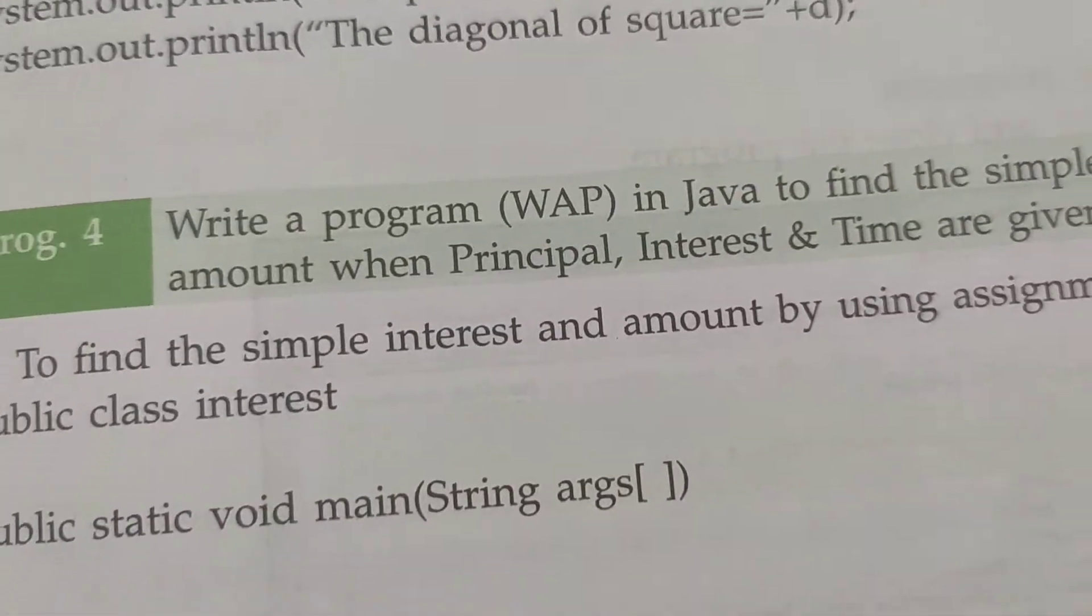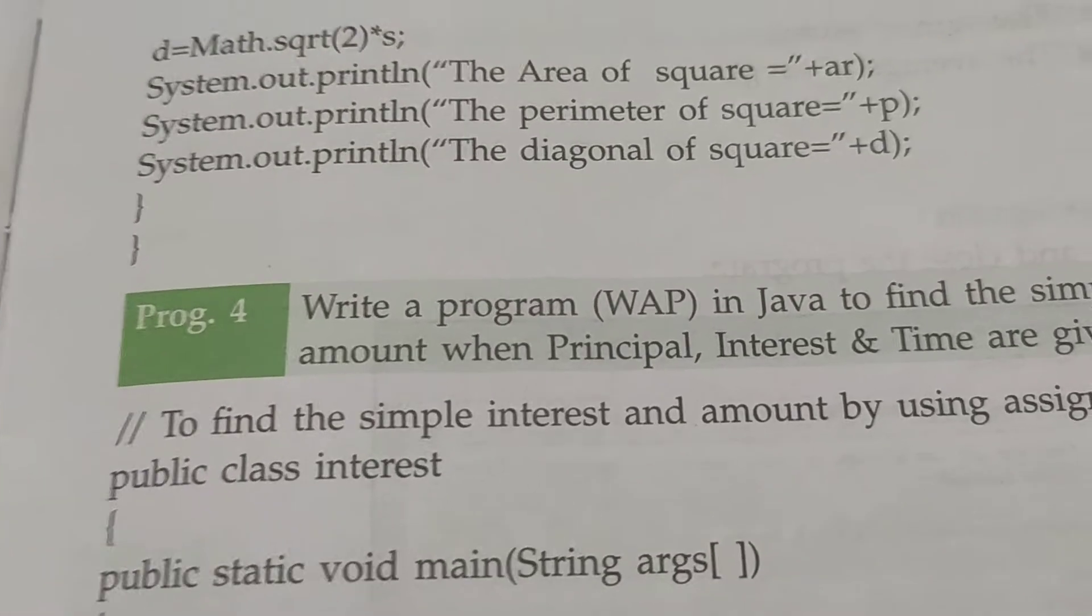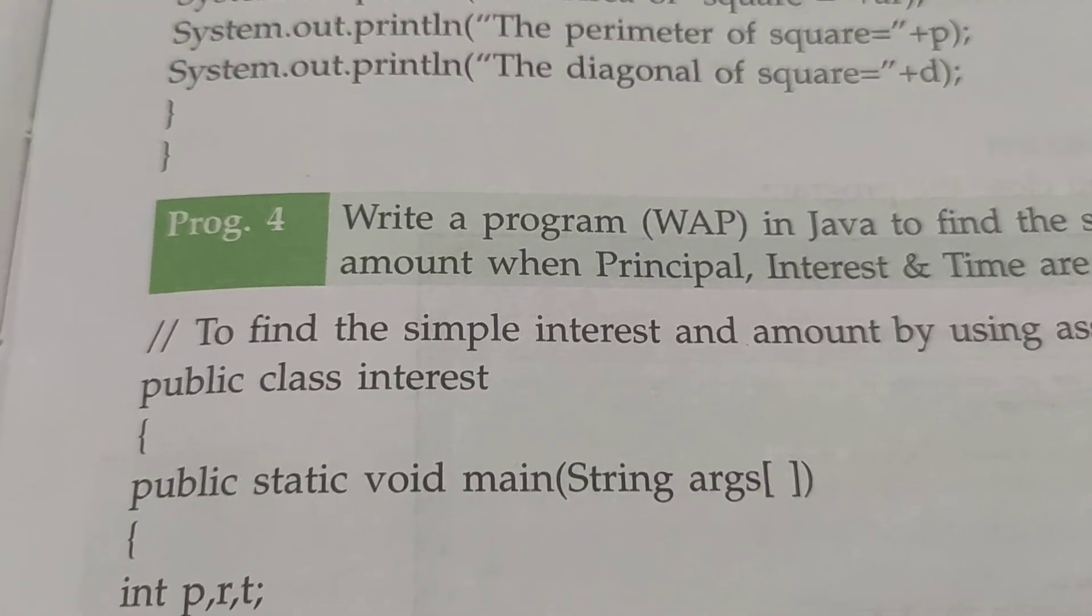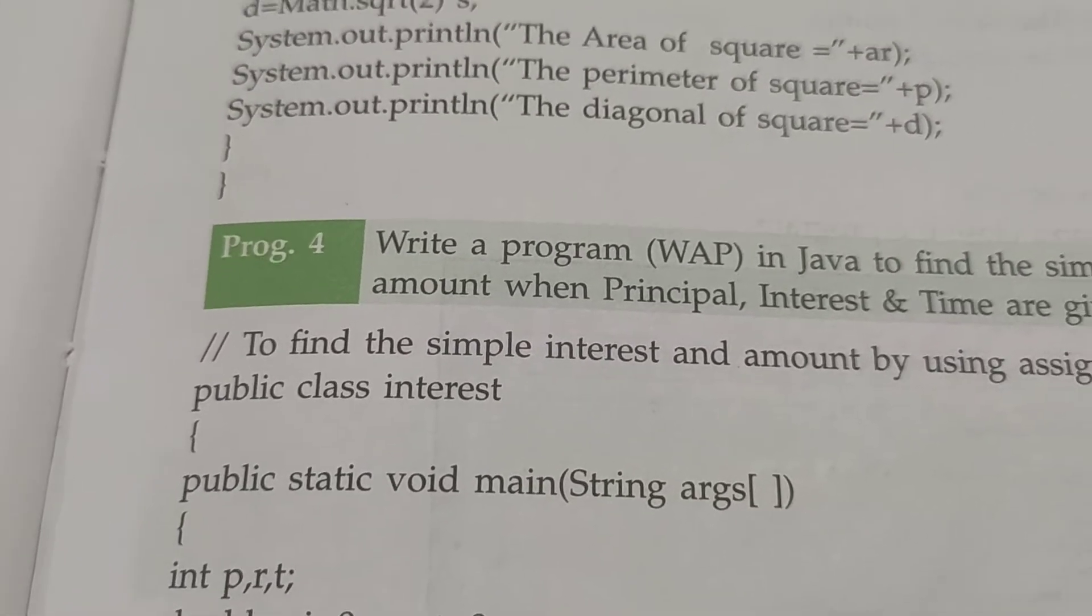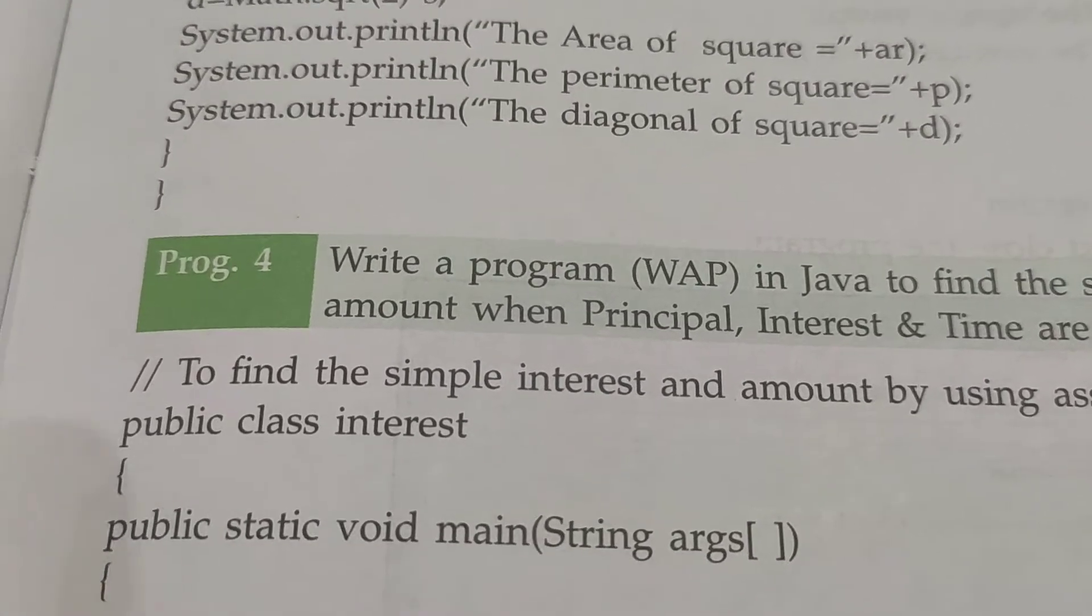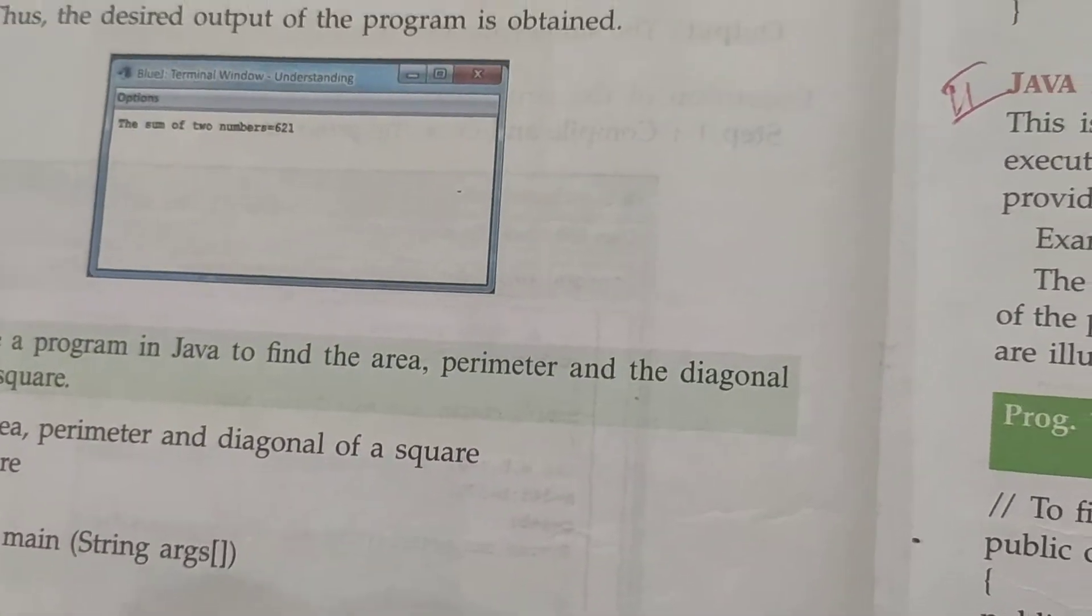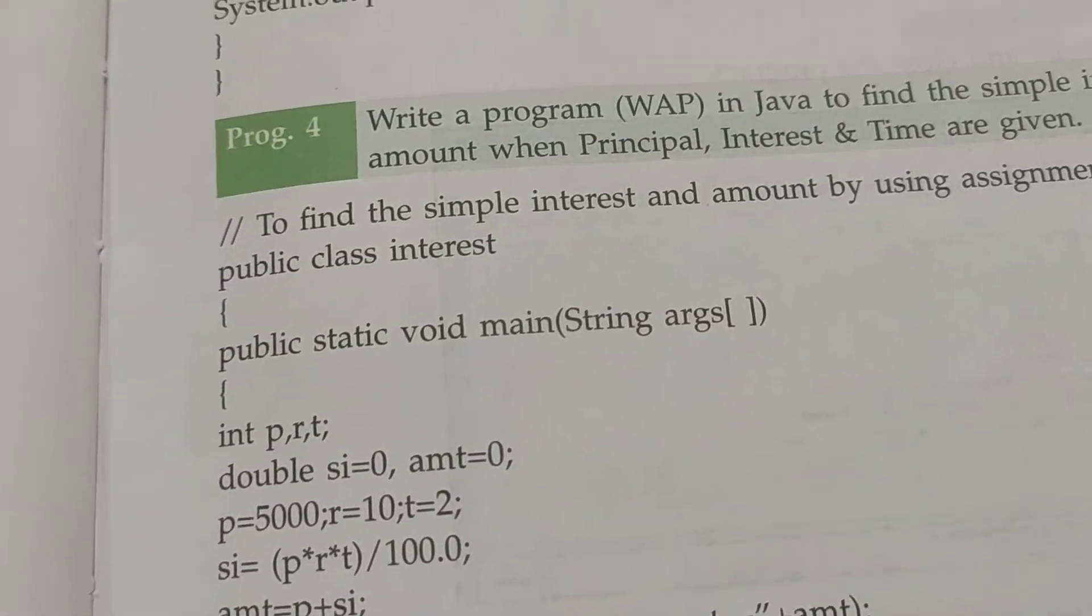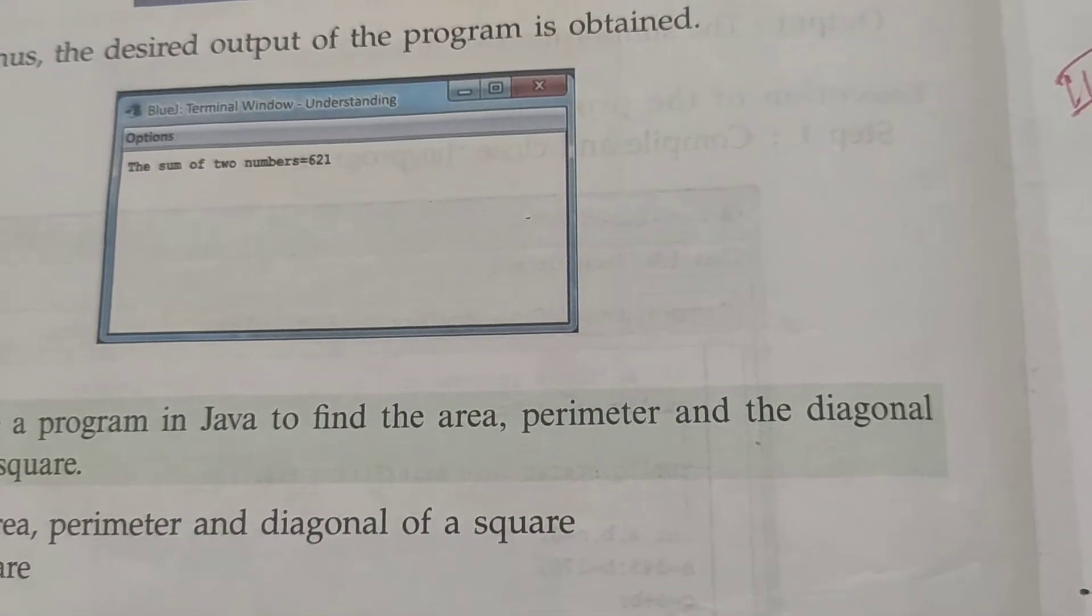So this is an example of how you can take input through an assignment operator. But in good programming you should not use this method. Why? If it is not mentioned in the question, you can do it this way and will get full marks, but you should not do it with this method. Why? Because Java's key feature is reusability of code. We cannot reuse this code.